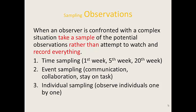There are three types of sampling you can use. One is time sampling — for example, you go to a school and observe students for the first week, the fifth week, and the 20th week of classes. Another is event sampling, where for a while you observe participants' communication skills, then their collaboration behavior, then how long they stay on task. You can also do individual sampling, which means you observe one individual for a while, then a second individual, then a third.